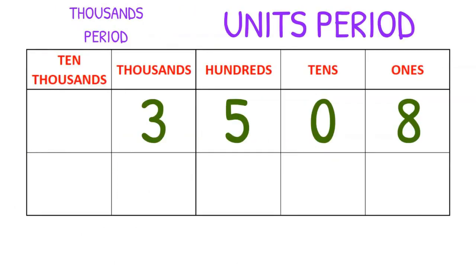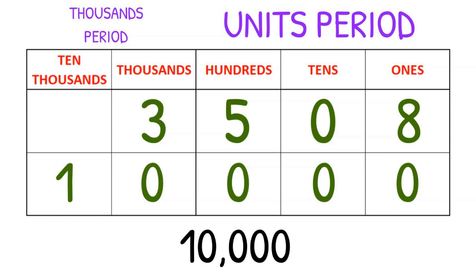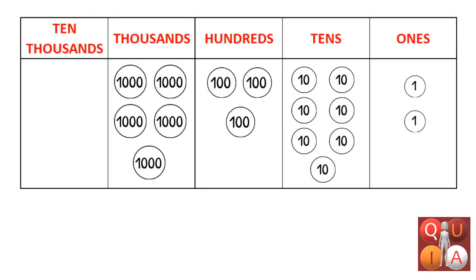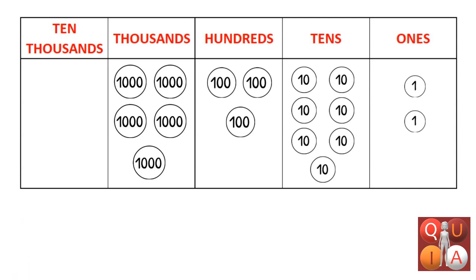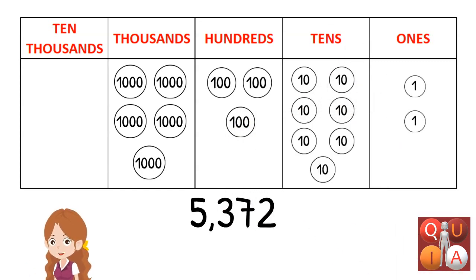For a four-digit number, the place values are thousands, hundreds, tens, and ones. For a five-digit number, the place values are ten thousands, thousands, hundreds, tens, and ones. Let's try to answer Activity Number 2. What are inside the place value chart? Those are number disks. I'm glad you still remember that. The equivalent of the number disks is equal to 5,372.